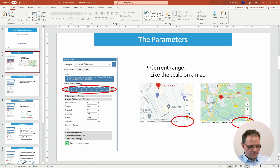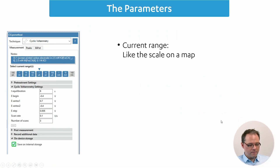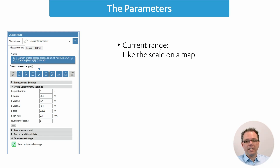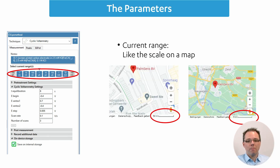Let's start with something easy: the current range. You can imagine the current range like a scale on a map. Looking at these two maps, we have a scale bar at the bottom right. With a scale bar of 50 meters, we can clearly see that PalmSense is in this building at the Randhofer, and it's not, for example, here where this church is.